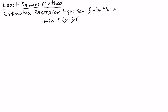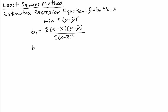When we choose values for b-naught and b1 that minimize the sum of y minus y-hat squared, we get a formula for b1 equal to the sum of (x minus x-bar) times (y minus y-bar), over the sum of (x minus x-bar) squared. And we get a formula for b0 equal to y-bar minus b1 times x-bar. Remember that x-bar is the mean of x and y-bar is the mean of y.